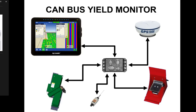With the CAN bus system, there's a module — that black box in the center — that everything connects into, and the display communicates with that module. The module handles the moisture sensor, the header switch, the flow sensor, and the GPS coordinates, feeding all of that into the display. It's a basic but hopefully helpful diagram showing how the module acts as the central hub rather than running individual wires between every device.